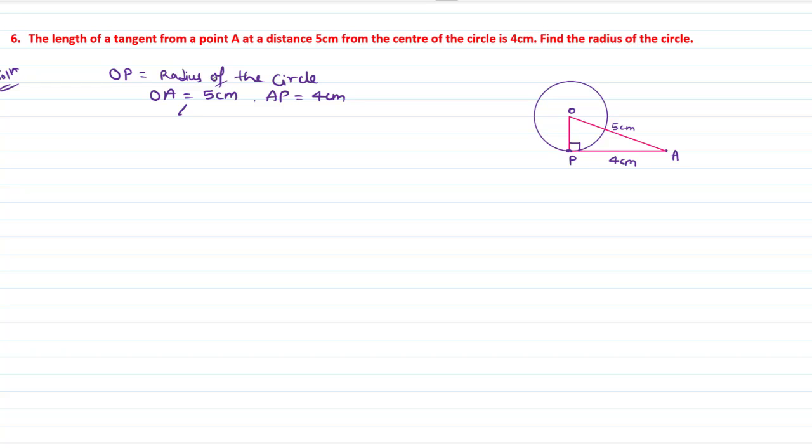And angle OPA is equals to 90 degree. Why? Because by tangent radius theorem, tangent and radius are perpendicular to each other. If you look at the right angle triangle OPA, apply Pythagoras theorem.